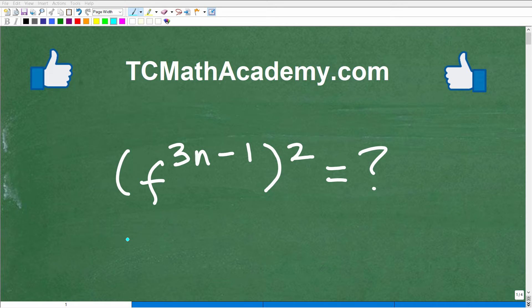Okay, let's simplify this algebra expression. The topic here is powers and exponents, so we have f to the 3n minus 1 power squared. We want to write this in a simpler way, i.e., simplify this expression.